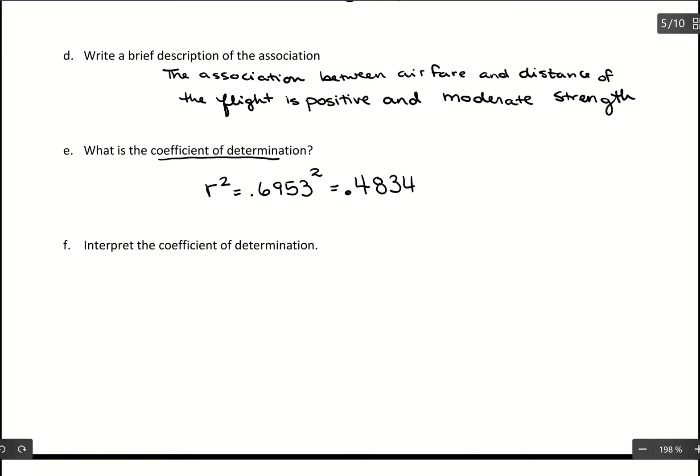So what we could say is 48.34 percent of the variation in Y, which in this case, Y is the airfare of the flight. So of the variation in airfare can be explained by X, which is the distance of the flight.